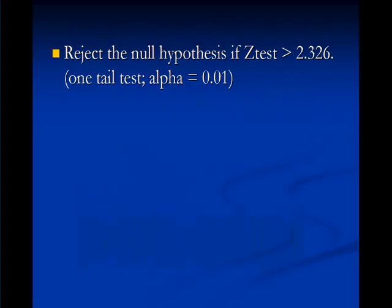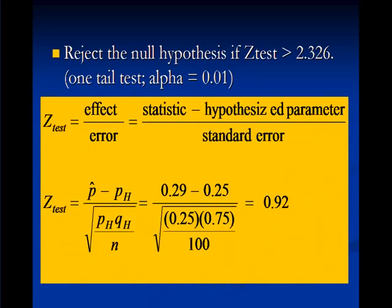Okay, the next thing we'll do is formulate a decision rule, which is reject the null hypothesis if z-test is greater than 2.326. Remember, the research hypothesis was that p was greater than 0.25. That's a one-tailed test, and we had a level of significance of 0.01. After that, we'll compute our test statistic. Our general formula here is the effect divided by error, or statistic minus hypothesized parameter over standard error.